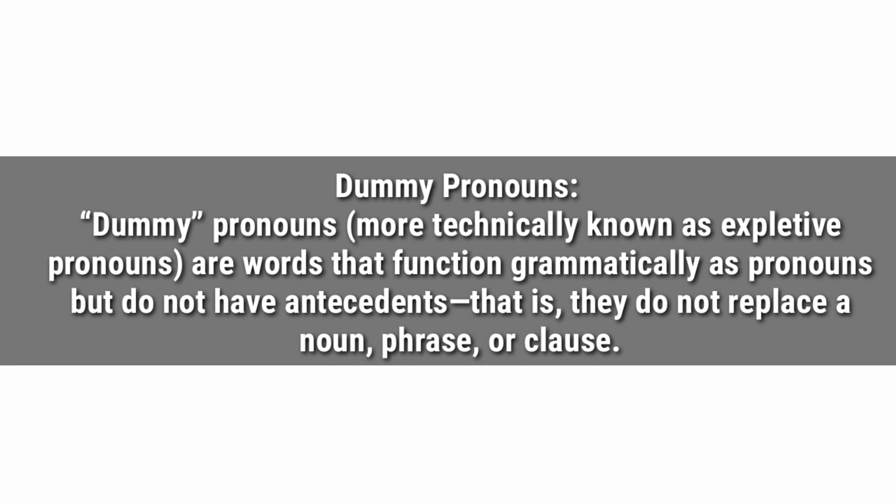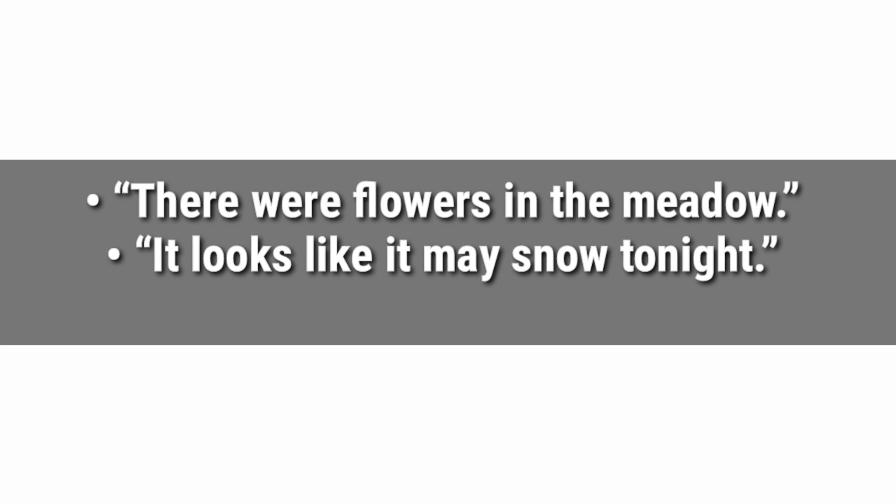The last category is dummy pronouns, more technically known as expletive pronouns — words that function grammatically as pronouns but do not have an antecedent. That is, they do not replace a noun, phrase, or clause; they refer to nothing in particular, instead helping the sentence to function properly in a grammatical context. There are two dummy pronouns: 'there' and 'it.' Example sentences: 'There is a ship in the harbor.' 'There were flowers in the middle.' 'It looks like it may snow tonight.' 'Could you tell me what time it is?'